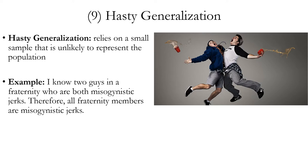Now, it could be true that a majority or a disproportionate amount of fraternity members are misogynistic — you'd have to define misogyny and then test it. However, because the claim itself is a universal generalization, it's going to be very hard to prove to begin with. And when you only have two examples, it's clearly a hasty generalization fallacy.